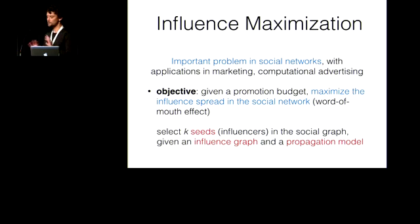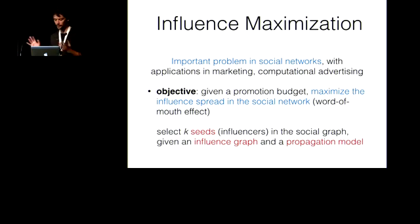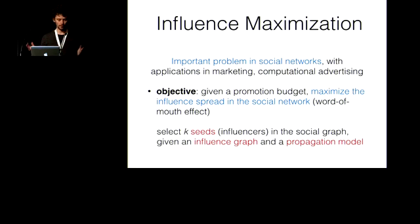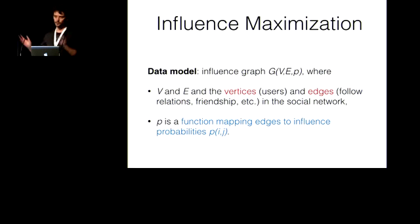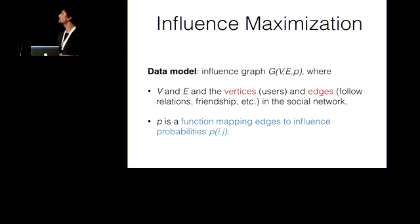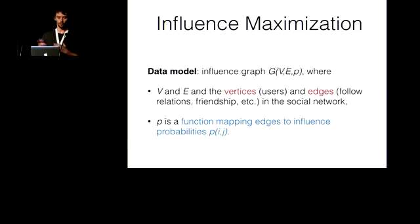The classic problem has applications in marketing, computational advertising, and so on. Roughly, the objective is: given a promotion budget, we want to maximize the influence spread of some message in the social network, linked to the word-of-mouth effect. The influence graph is the social graph where vertices are users and edges are follow or friendship relationships, with a function p that associates for every edge an influence probability — the probability that user i influences user j.